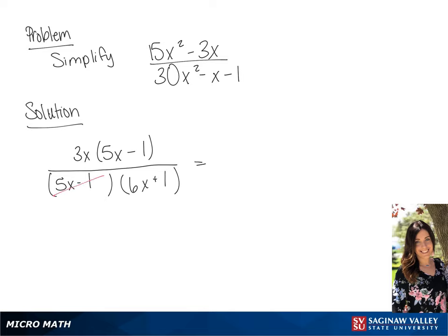Since 5x minus 1 over 5x minus 1 is 1, we can cross both those off, and we will get a final answer of 3x over 6x plus 1.